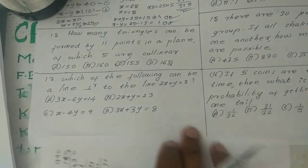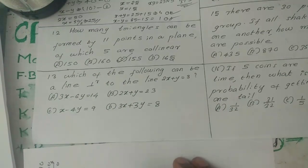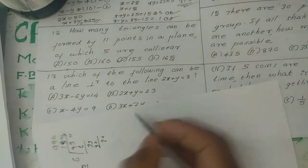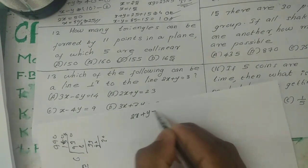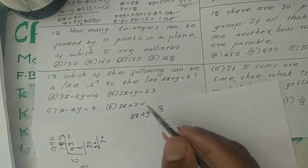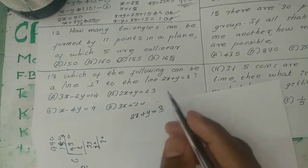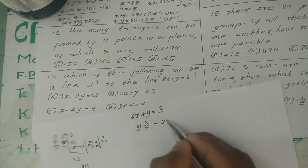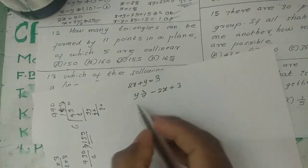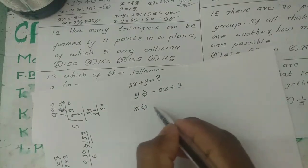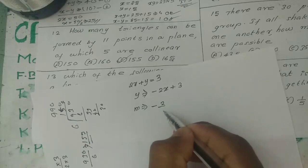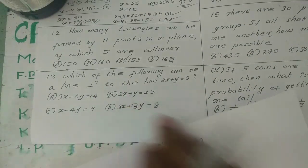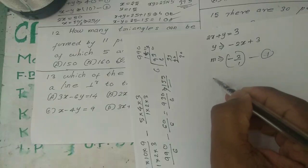The next question: which of the following can be a line perpendicular to the line 2x plus y equal to 3? Rearranging, y equal to minus 2x plus 3, so the slope of this line is minus 2.